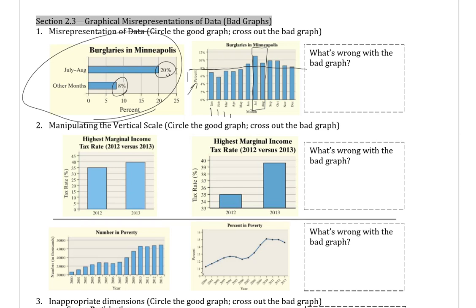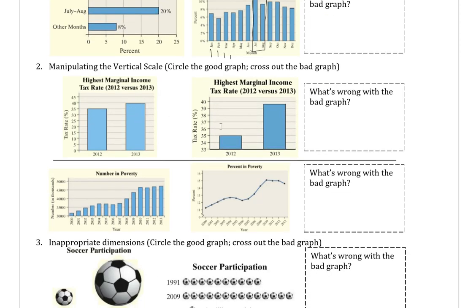For the second graph for manipulating the vertical scale, this is going to talk about a very important thing about histograms and bar graphs. Both of these are comparing highest marginal income tax rate for 2012 to 2013. The first graph makes the bars look pretty close to each other, whereas the second graph makes 2012 look like just a fraction of what 2013 is. The bad graph is the second graph here.